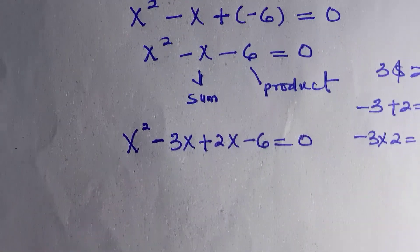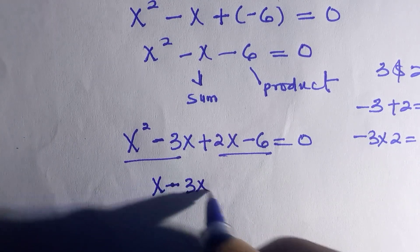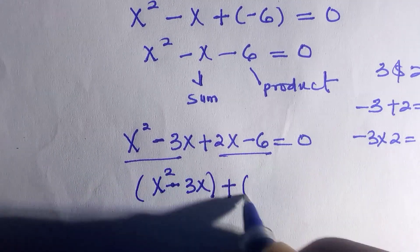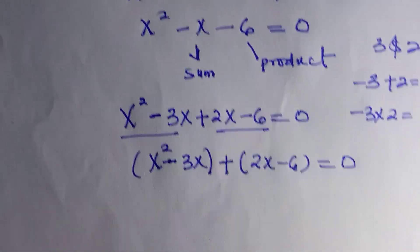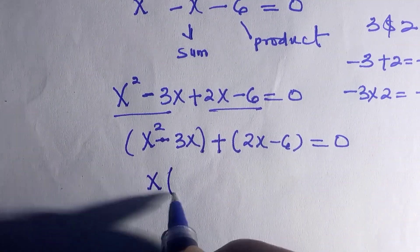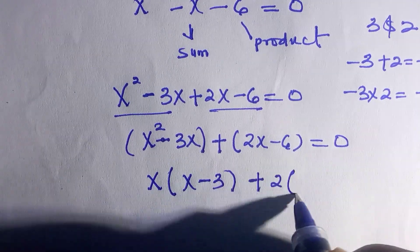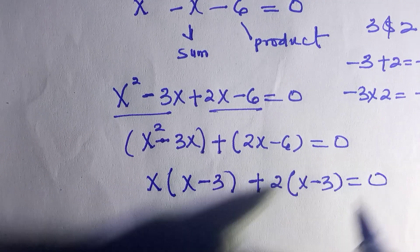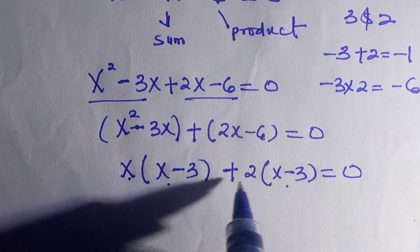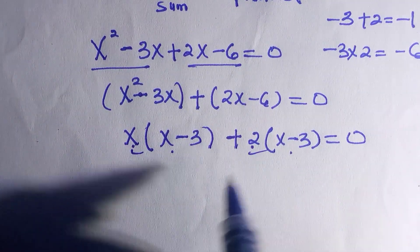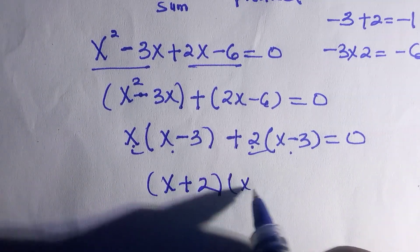We can group it to two as x raised to power two minus three x plus bracket two x minus six everything equals zero. Then x is common here, taking it out we have x minus three. We have two common here, taking it out we have x minus three as well equals zero. So we have x plus two, we take it together and we take just one x minus three.